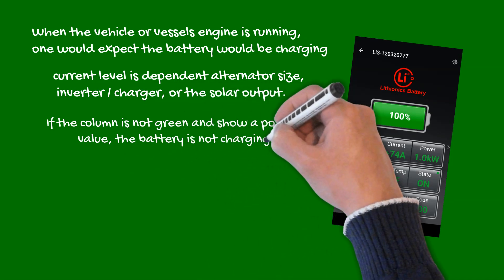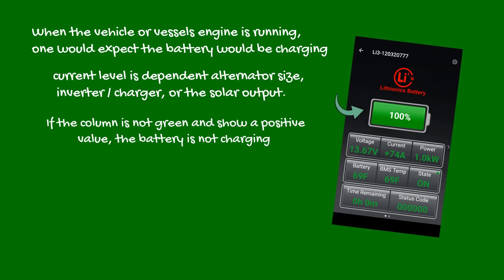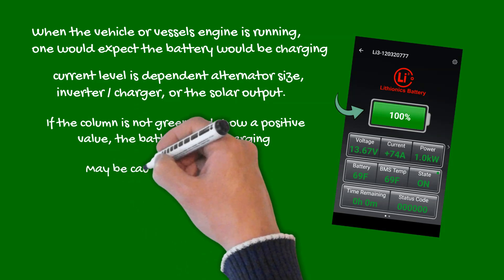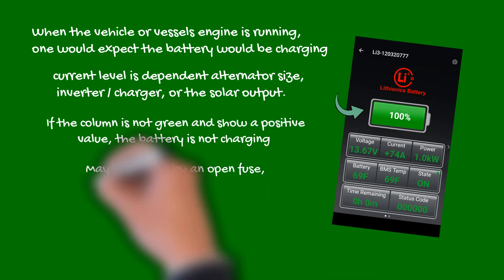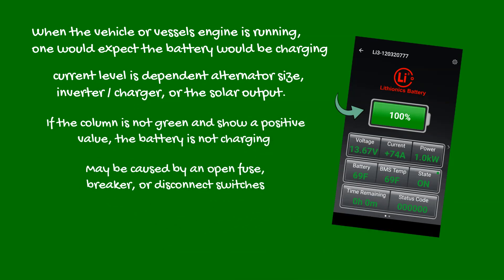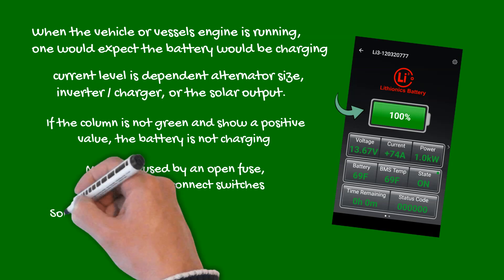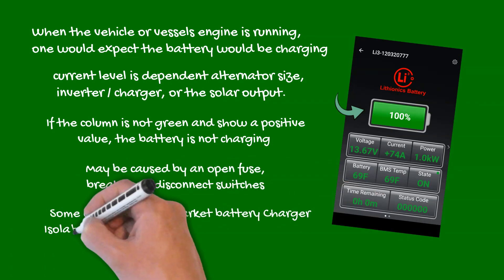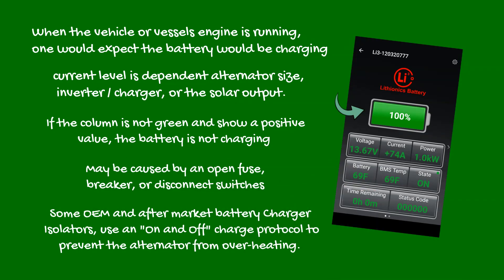If the column is not green and does not show a positive value, the battery is not charging, which may be caused by an open fuse, breaker, or disconnect switches. Please note, don't confuse intermittent charging with that caused by some OEM and aftermarket battery isolators — these modules use an on-and-off protocol to prevent the alternator from overheating.